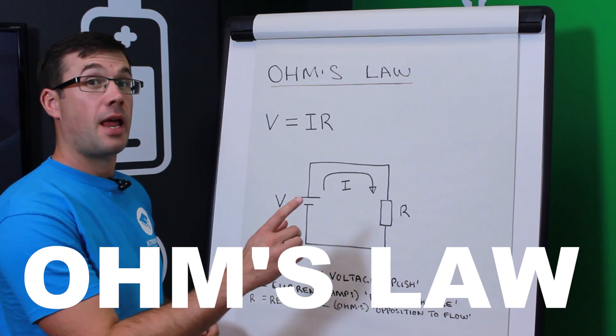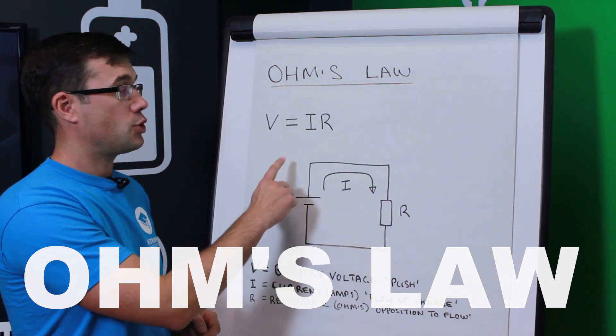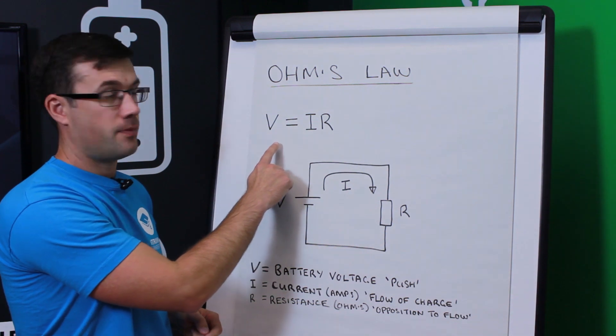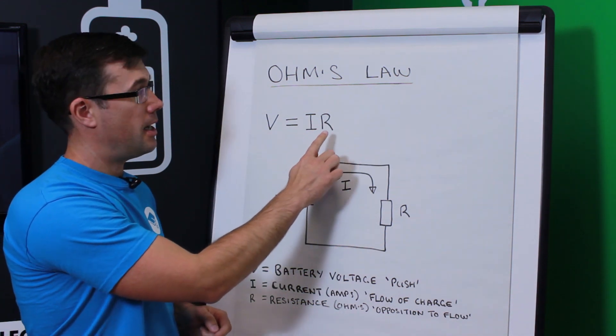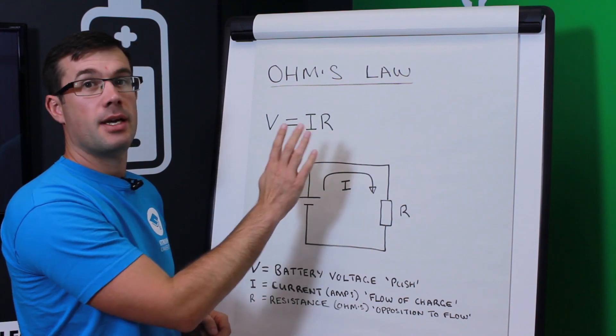Ohm's law explains the relationship in a circuit between the voltage, the current that flows through the circuit in amps, and the resistance of the circuit in ohms.